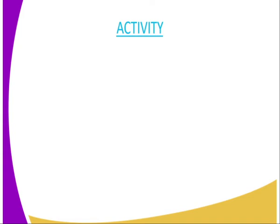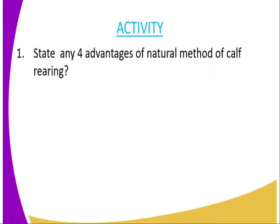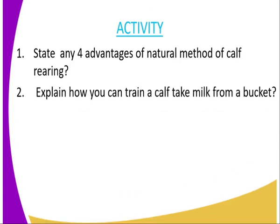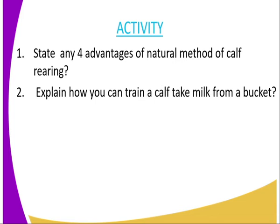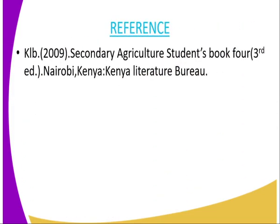We have come to the end of today's lesson, and I'm going to give you the following assignment. The first question: state any four advantages of the natural method of calf rearing. The second question: explain how you can train a calf to take milk from a bucket. For reference, you can refer to Secondary Agriculture, a student book form, published by the Kenya Literature Bureau.